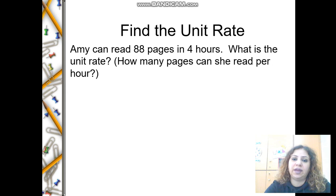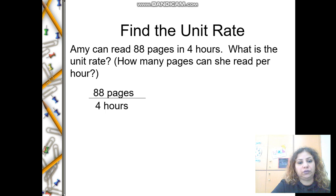Find the unit rate. Amy can read 88 pages in 4 hours. What is the unit rate? How many pages can she read per hour? That means I need to change the 4 hours to 1 hour. First, write the numbers as a fraction: 88 over 4. Divide the denominator by 4, this way you change the 4 to 1. 88 divided by 4 equals 22 pages per hour.